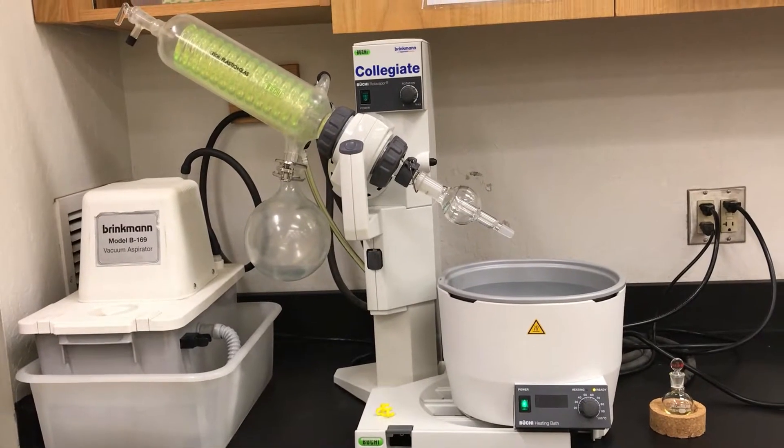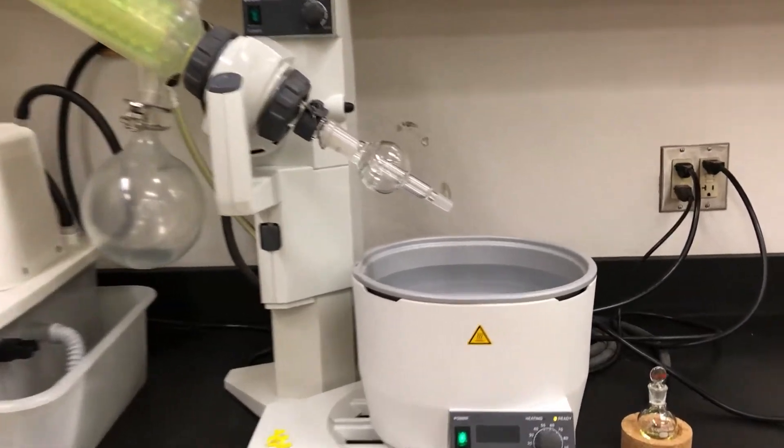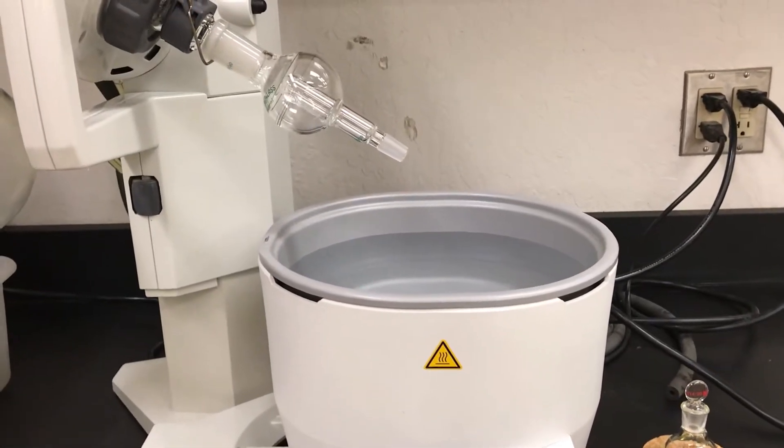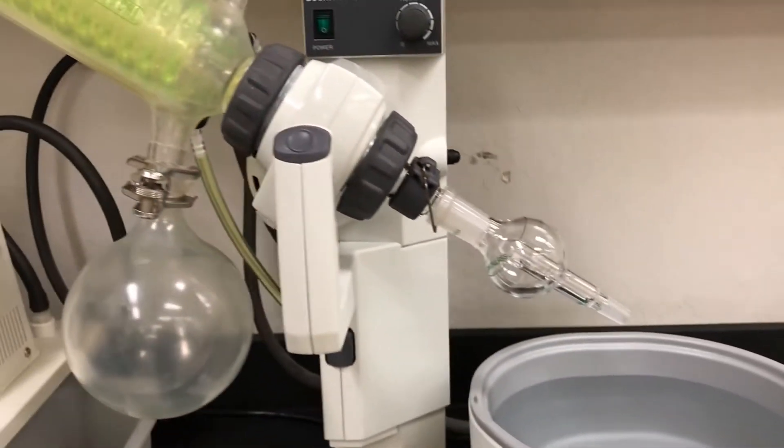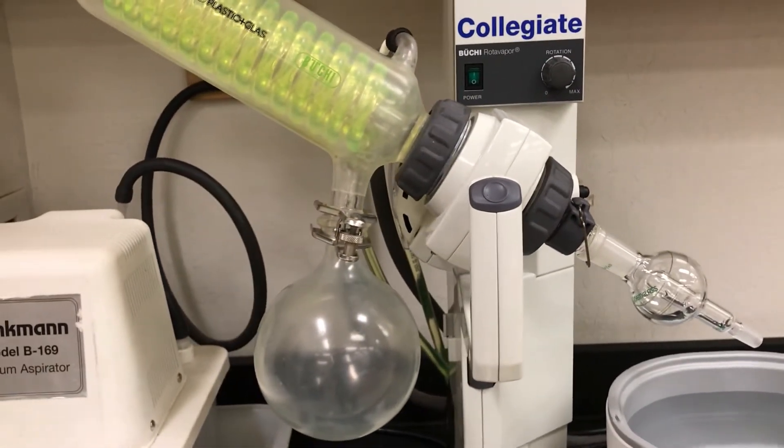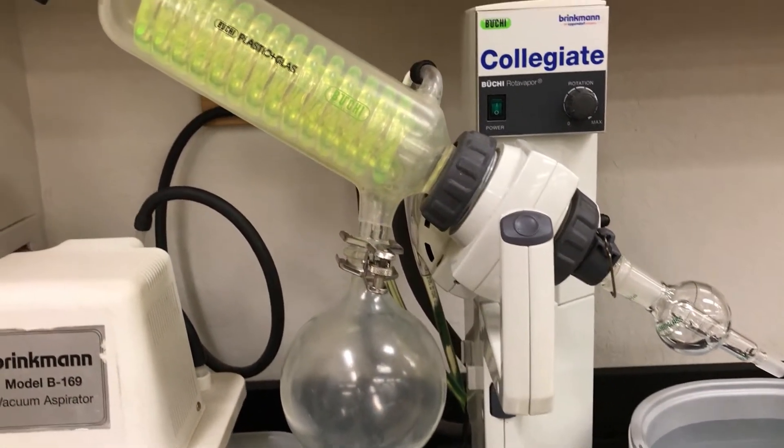So here is our instrument. We'll be attaching our flask to this area and heating it in a water bath. That will boil the solvent and turn it into a gas which will then move over and contact this yellow area.